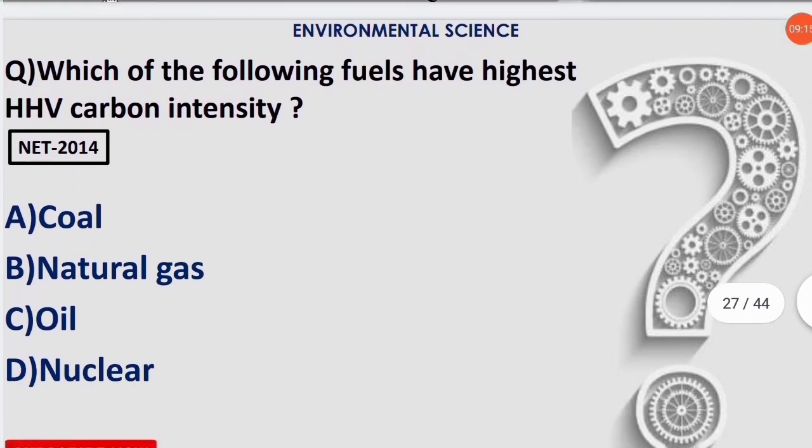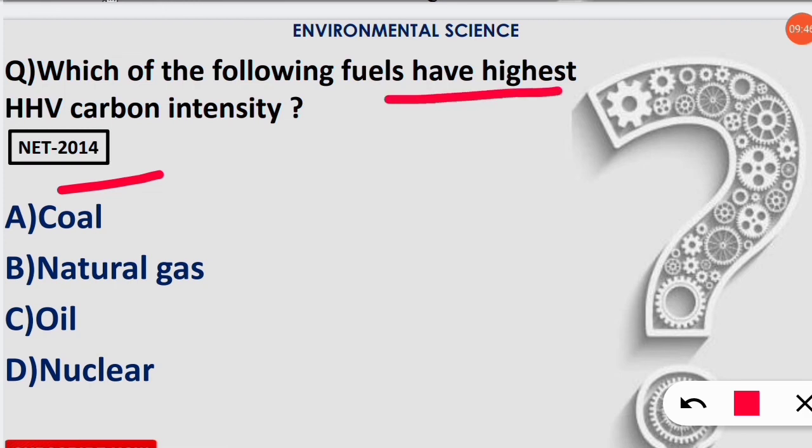The next question I have intentionally kept after this one. In the 2014 examination, the same kind of question has been asked. It asks which of the following fuels have highest HHV (Higher Heating Value) carbon intensity? Here, if you know the concept as I told in the previous question, you can simply write that option A is the correct option. Coal has the highest carbon intensity among these four. The exact sequence is coal, natural gas, oil, nuclear. The same option was given in 2013 exam but with a different kind of question - it was asking the sequence, but here it's asking which has the highest carbon intensity.